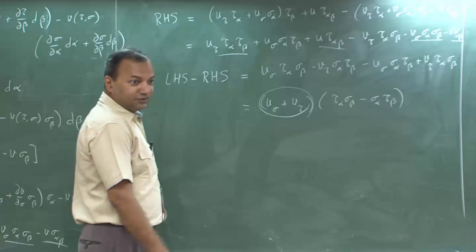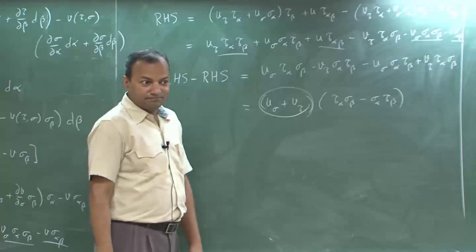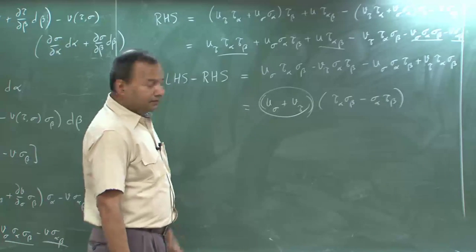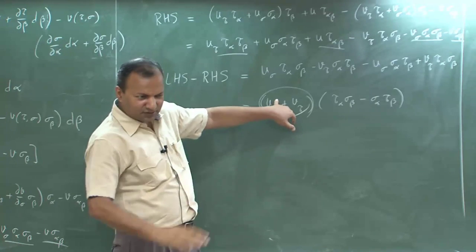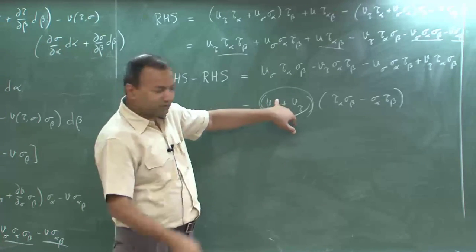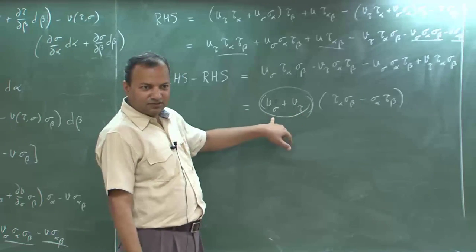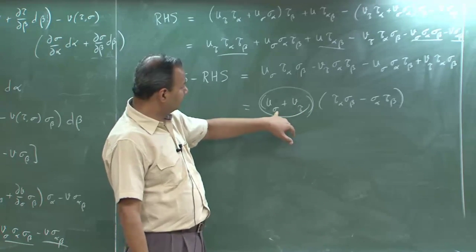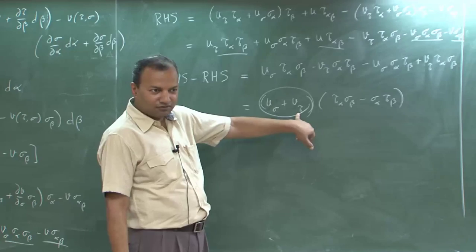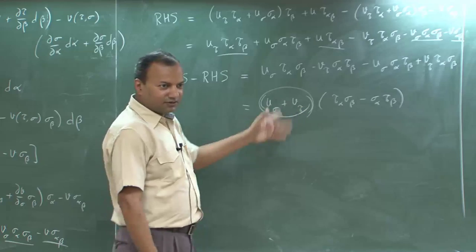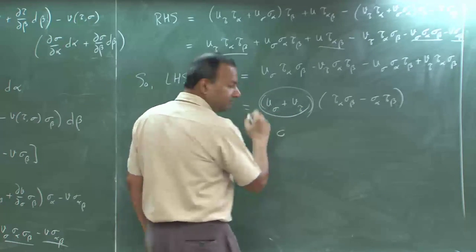Now apply Cauchy-Riemann here. Since u and v are functions of τ and σ, differentiating v with respect to σ and u with respect to τ — by the Cauchy-Riemann equations in the (τ, σ) coordinate system — that is the negation of the other, so the whole expression is 0.